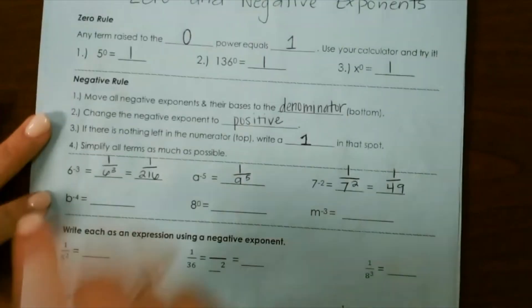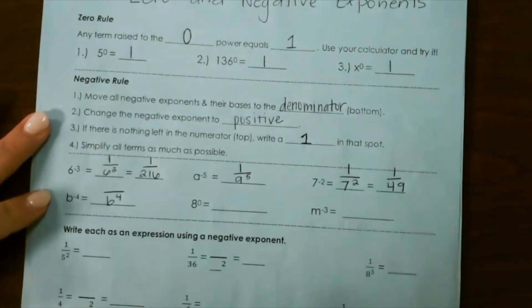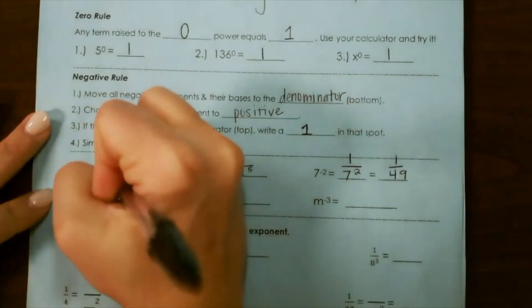For our next example, b to the negative fourth is going to go to the bottom, and we change our exponent to positive, and 1 goes to the top.